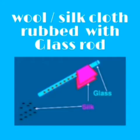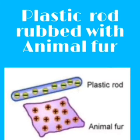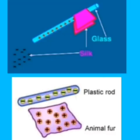When two plastic rods are rubbed with animal fur individually and the plastic rods are kept beside each other, they repel each other. Similarly, when two pieces of animal fur which were rubbed with plastic rods individually are kept beside each other, they also repel each other.